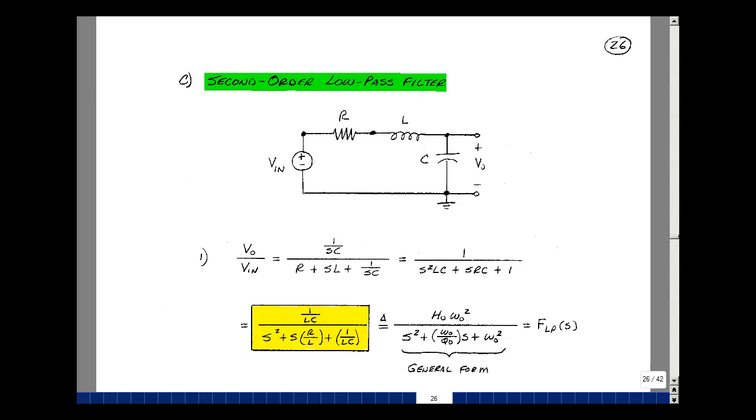Given the three constants, omega naught, H naught, and Q naught, we can actually specify the behavior of the filter. We'll take a look at that in the following page or so.